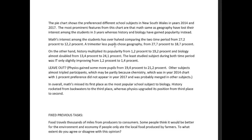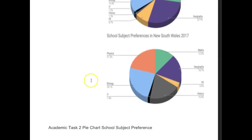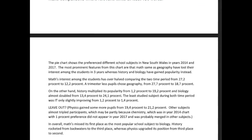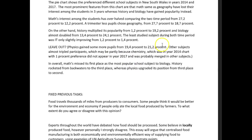The least studied subject during both time periods was IT, only slightly improving from 1.2% to 1.4%. Let me see why you thought to leave this out. Absolutely do not leave out chemistry — that's a big deal that it appeared in 2014 and did not appear in 2017. In fact, all of these subjects are considered key features. These are the things you absolutely have to mention at least by name, so no — if you had left this out, that would have been very detrimental to your task achievement score.